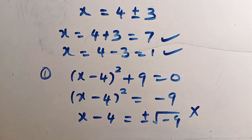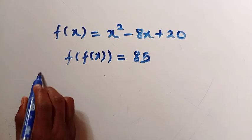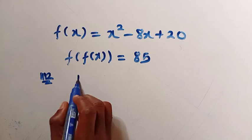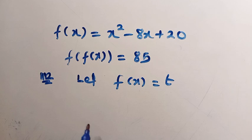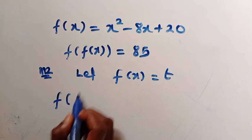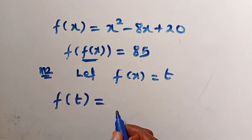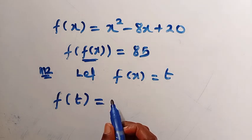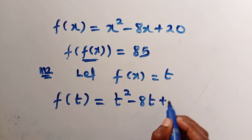Now let's solve this using a second method. If you are new to this channel, please hit the like button and subscribe. For Method 2, suppose I let f of x equal t. So anywhere we see f of x in f of f of x, we replace it with f of t. Using t as the input instead of x, we have f of t equals t squared minus 8t plus 20.